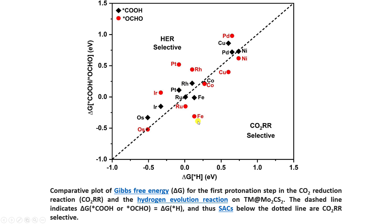For the FE catalyst, the H+ adsorption energy is slightly positive — just above zero. But if you look at the COOH or OCHO adsorption energy, it is significantly negative, around -0.267 eV. This means the formation of the OCHO intermediate is strongly favored compared to H+, indicating that this FE catalyst is selective towards CO2RR rather than HER.